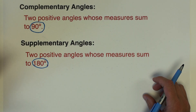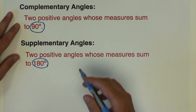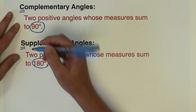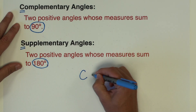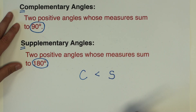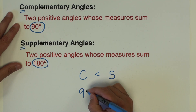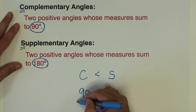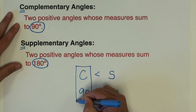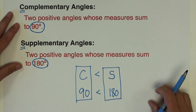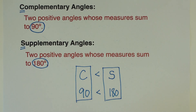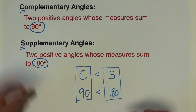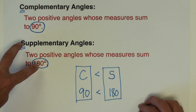A way I tricked myself into memorizing this when I was starting out is looking at the letters of the two words. Complementary — C comes before S in the alphabet, and if I rank the numbers 90 and 180, then 90 is less than 180. So complementary is 90 and supplementary is 180. If that helps you, feel free to steal it. If not, find another way to keep these two straight: complementary is 90, supplementary is 180.